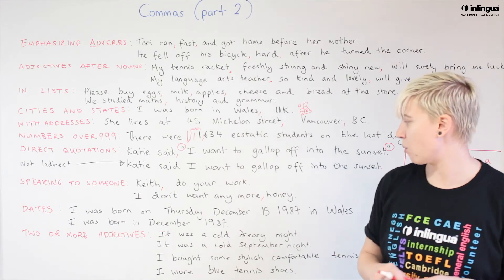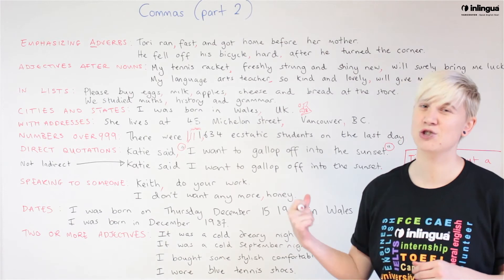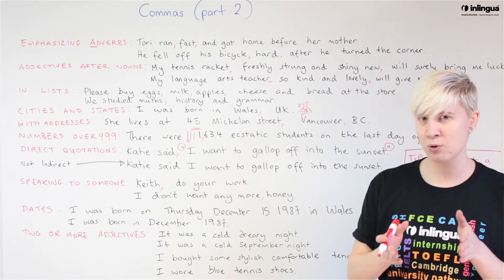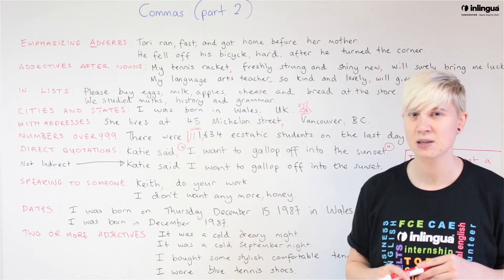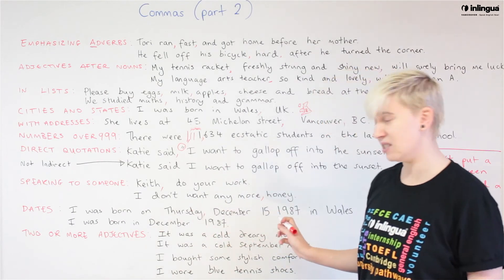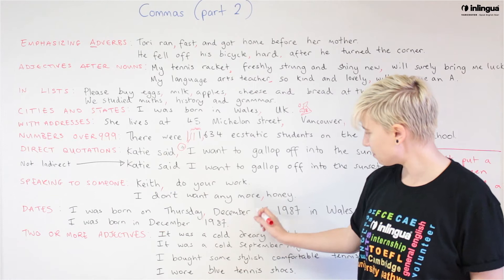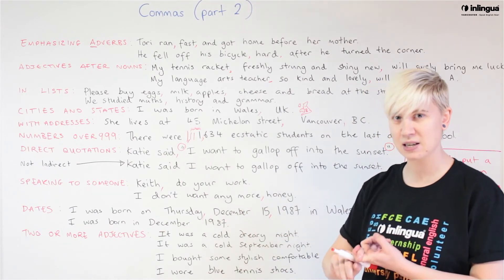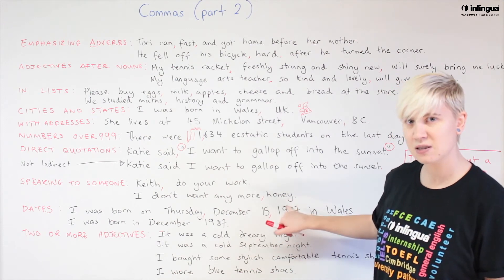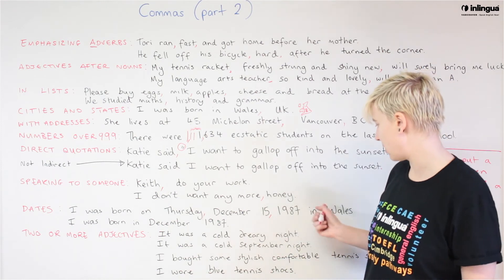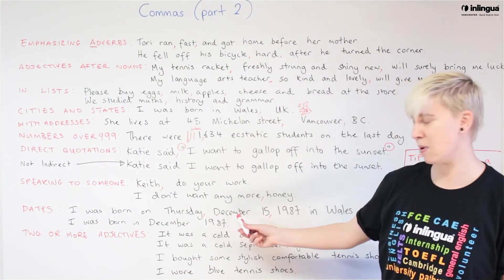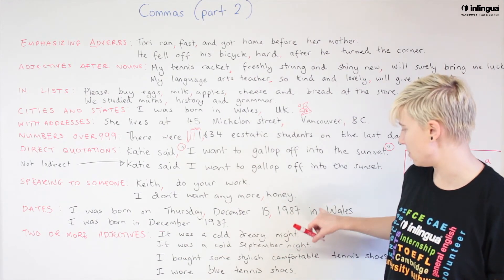We use commas in dates. For example: 'I was born on Thursday, December 15, 1987 in Wales.' Think about addresses — when we start small, we get bigger. In English we do the same with dates, splitting all the different pieces of information with commas. Thursday gets a comma because it's the day. December 15th — the month and day of the month go together. Then 1987 followed by 'in Wales.' We don't need a comma after the year here because we are connecting to the place with a preposition.